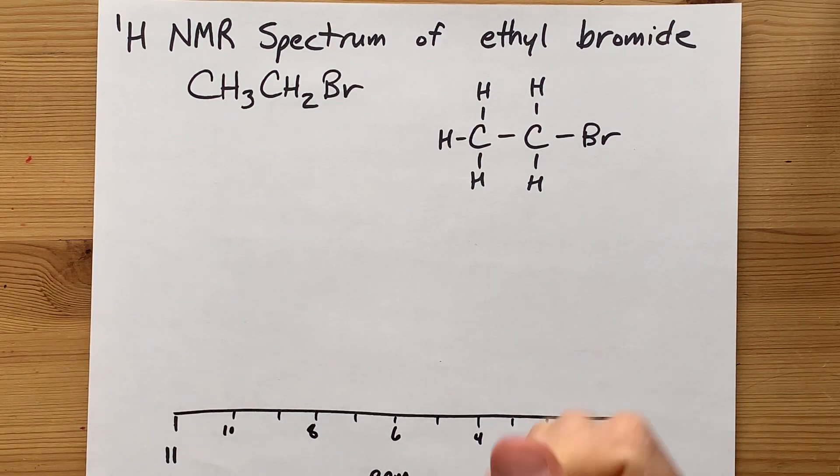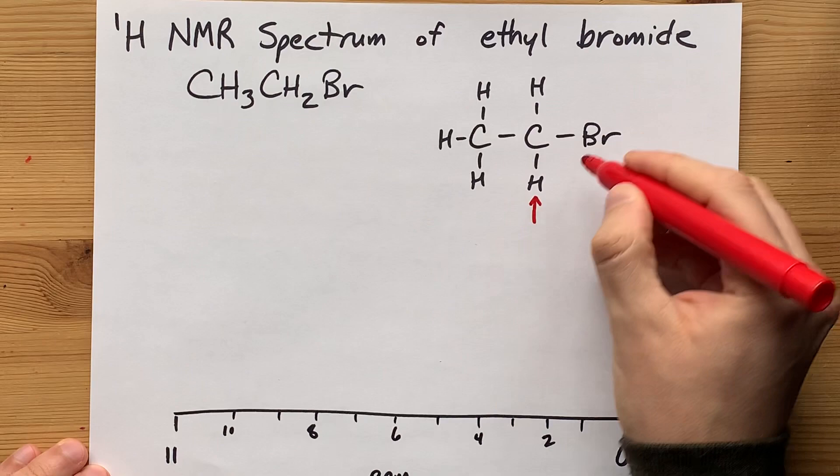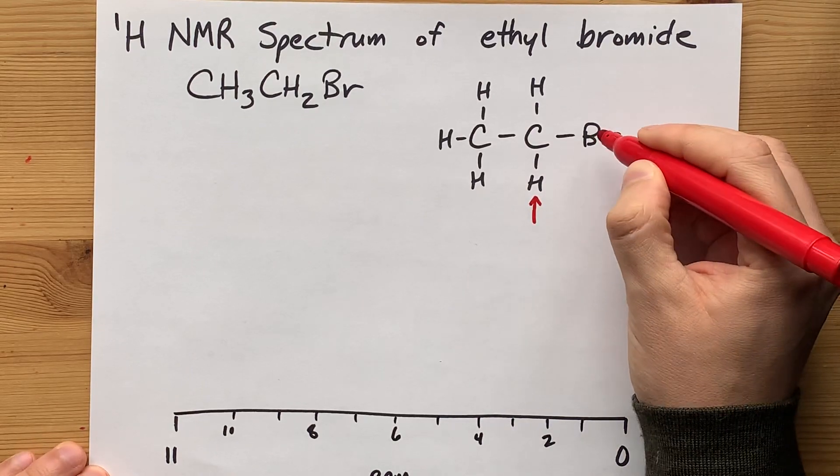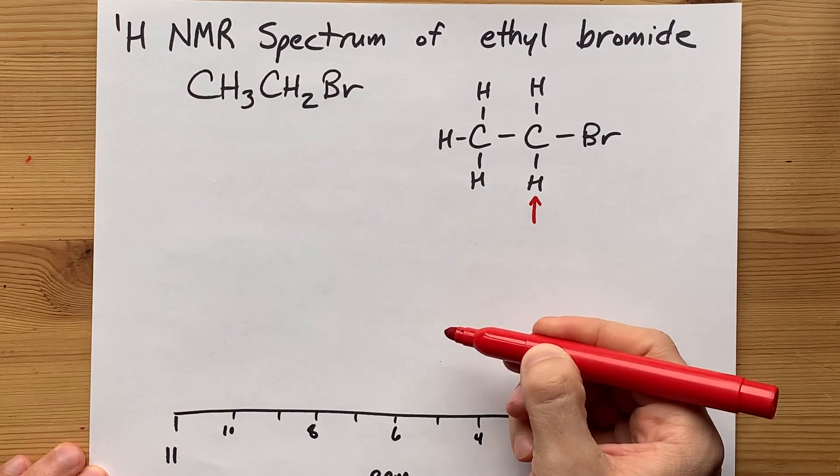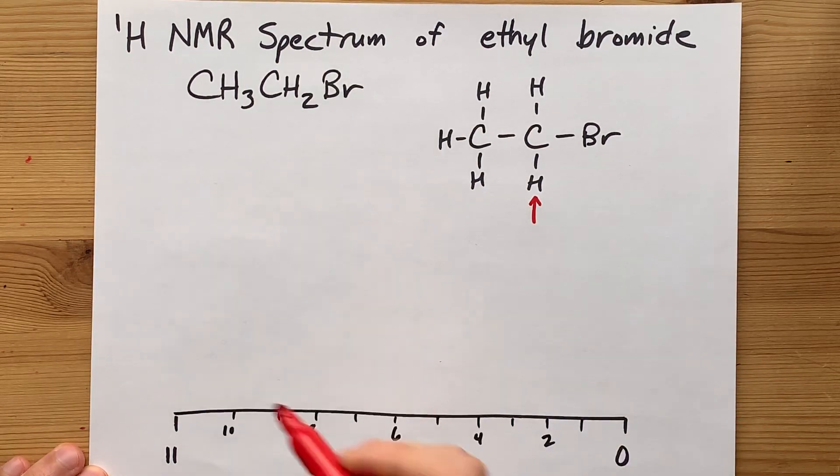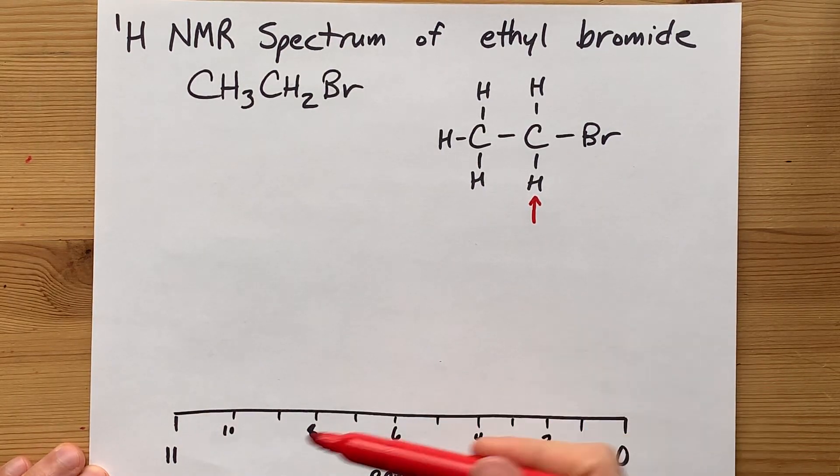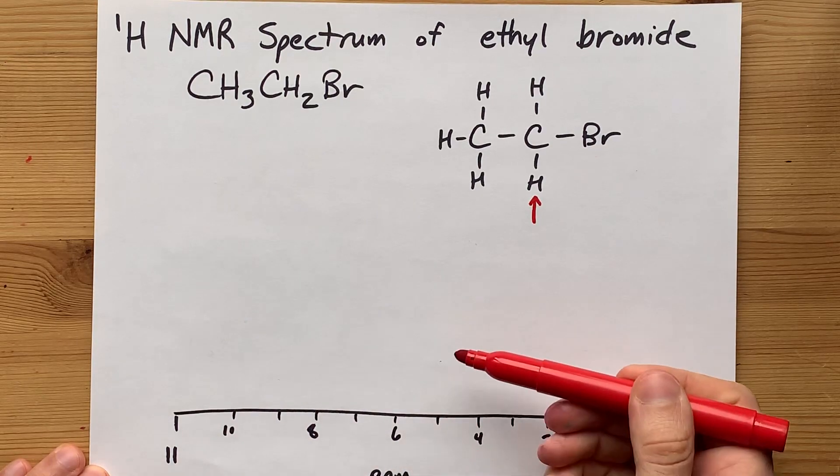So, the hydrogens that are closer to electronegative atoms are going to be further downfield. That's further to the left on these diagrams, but it actually means a higher number of parts per million shift.